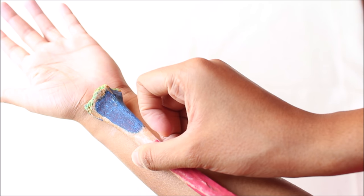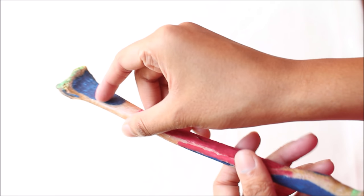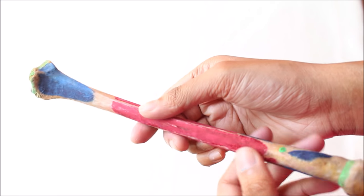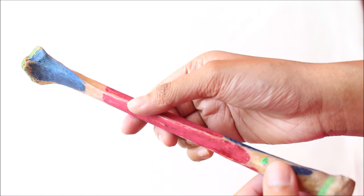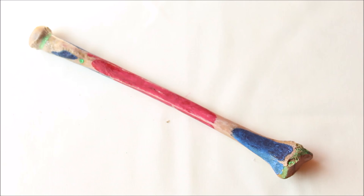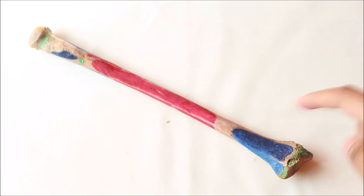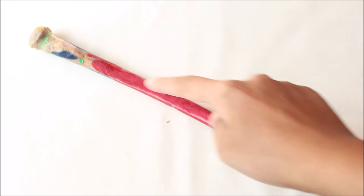The deltoid tuberosity is facing anteriorly and the Lister's tubercle is facing posteriorly. Therefore we come to the conclusion that this radius is of the left side. Let's learn about the features of the radius — it has an upper end, a lower end, and a shaft.